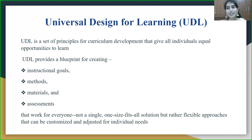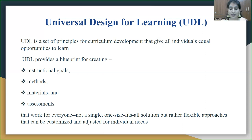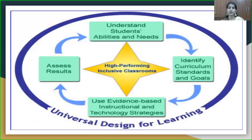Universal Design for Learning is about accessibility of education for all. It works for everyone — not just a single person — offering not a one-size-fits-all solution, but rather flexible approaches that can be customized and adjusted for individual needs, adapting and modifying the curriculum and instructions as per the need of each child.